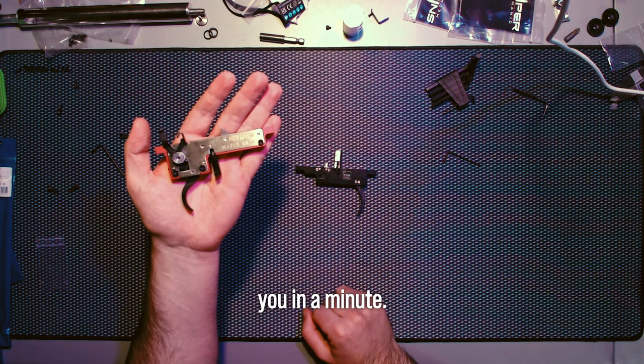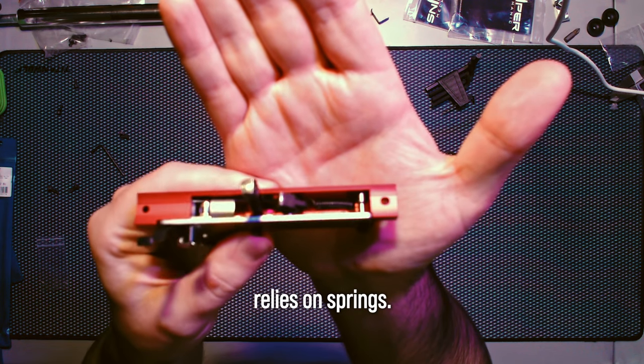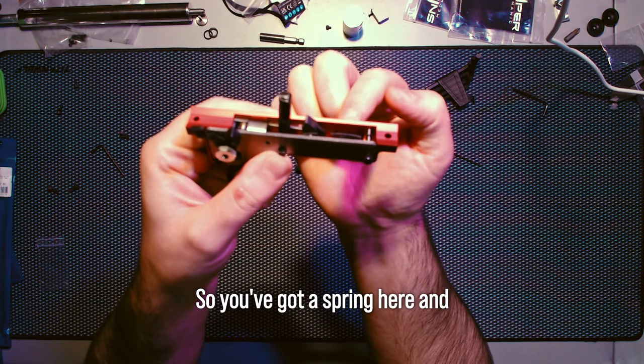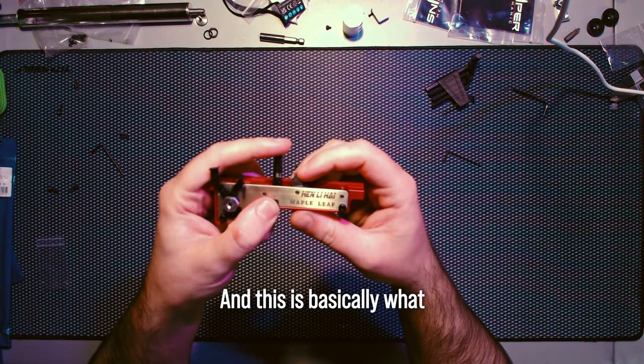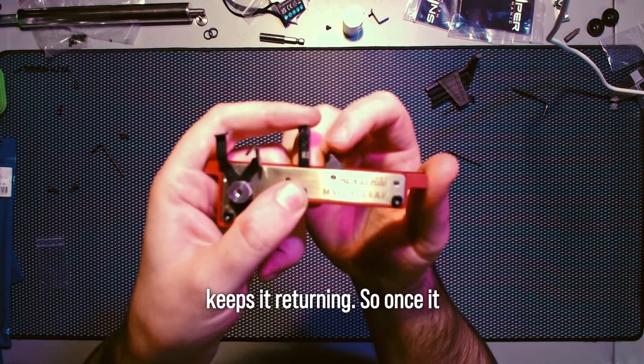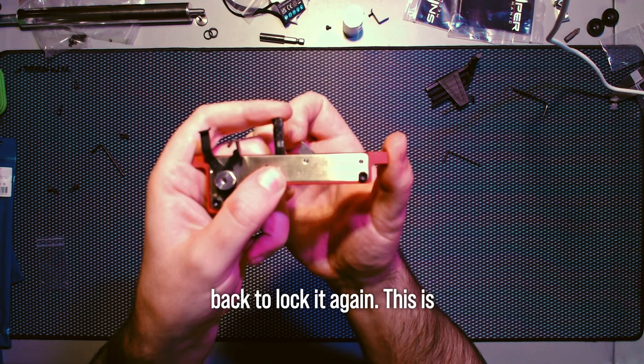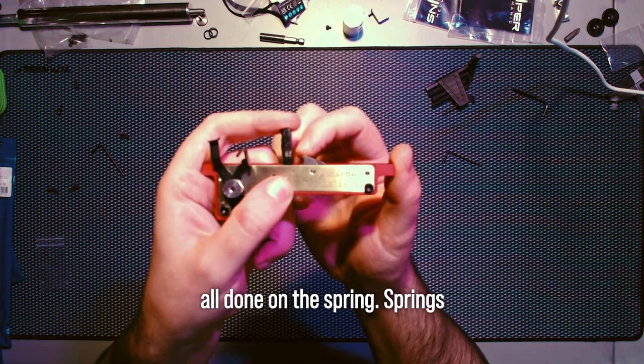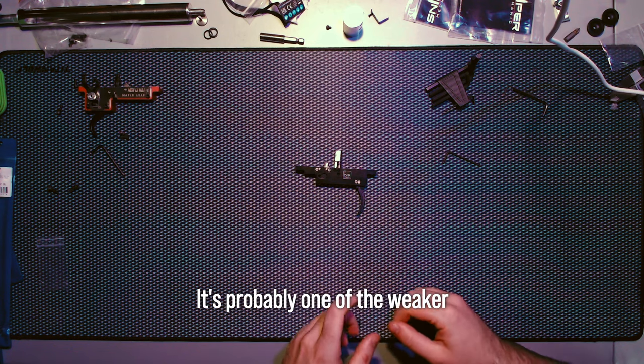They're both 90 degree. Main thing is this relies on springs - you've got a spring here and another one around the back for the trigger. This is basically what keeps it returning after it's been shot. Springs can and do break on VSR triggers, it's probably one of the weaker points.